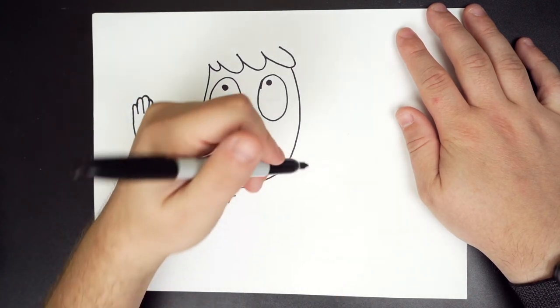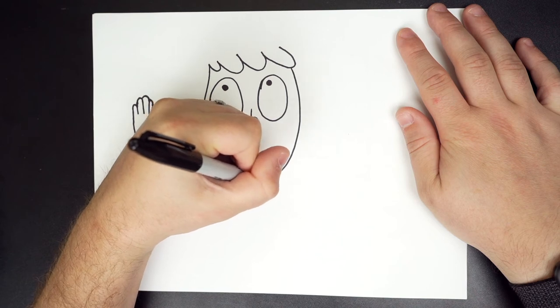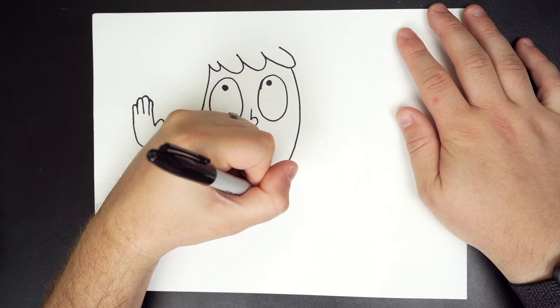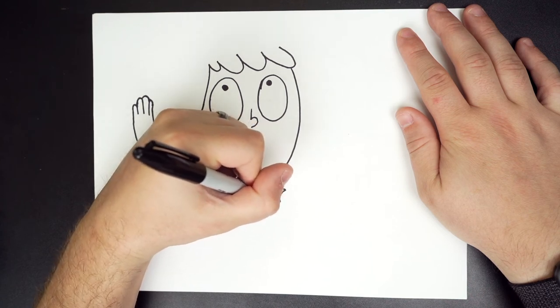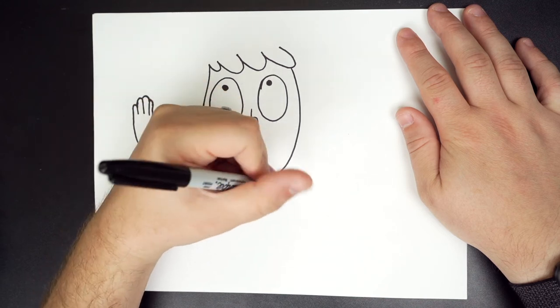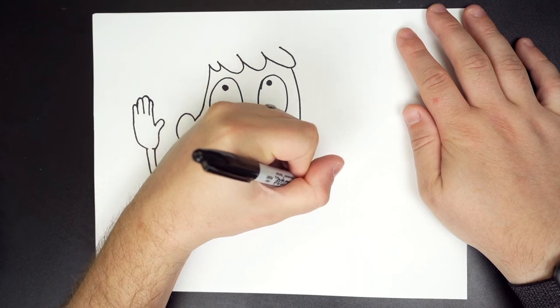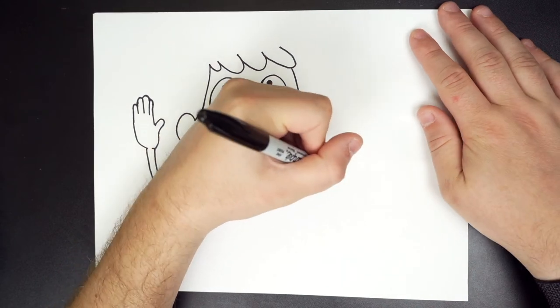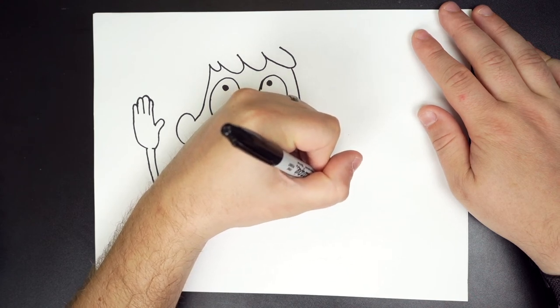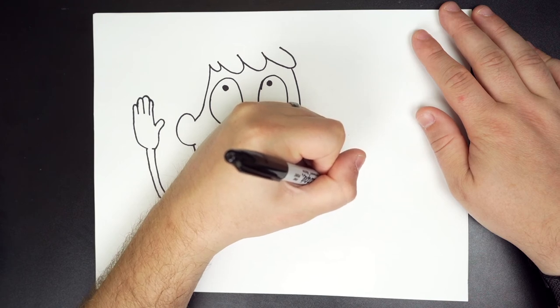So this hand we're going to do is her pointing. We're going to go straight across. And then we're actually going to do like a circle in. And then we're going to come back. And down. And then we're going to get her arm. Just do one big circle. And then come up towards the finger.